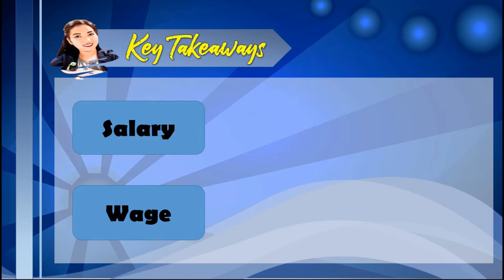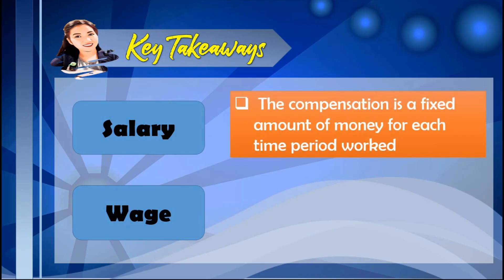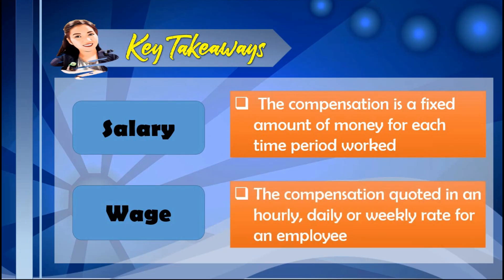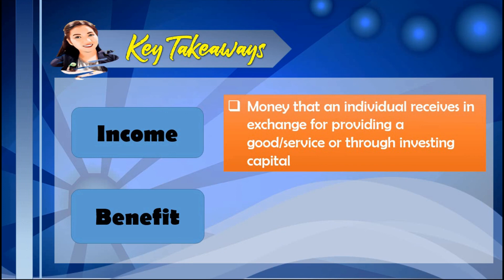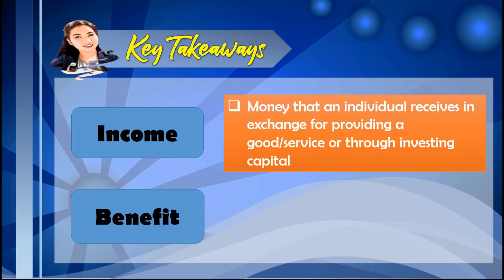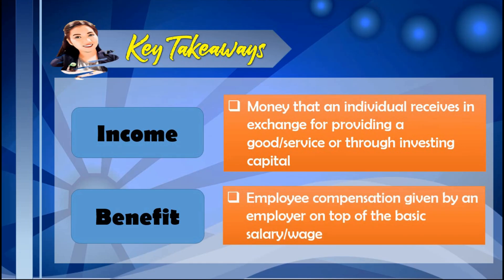Here are the important concepts to remember: Salary is a fixed amount of money for each time period worked. Wage is the compensation quoted in an hourly, daily, or weekly rate for an employee. Income is the money an individual receives in exchange for providing a good or service, or through investing capital. Benefit is employee compensation given by an employer on top of the basic salary or wage.